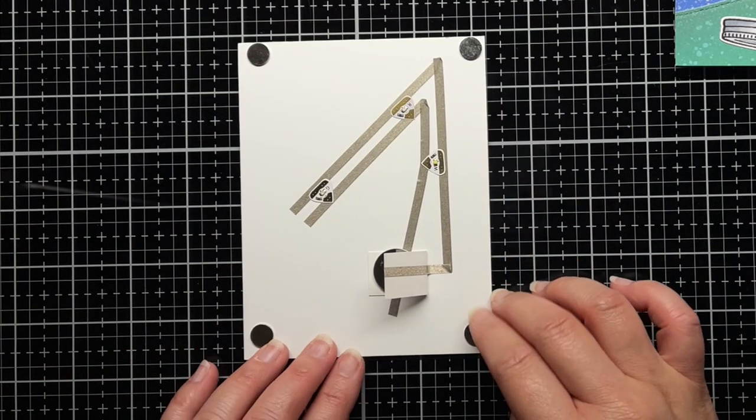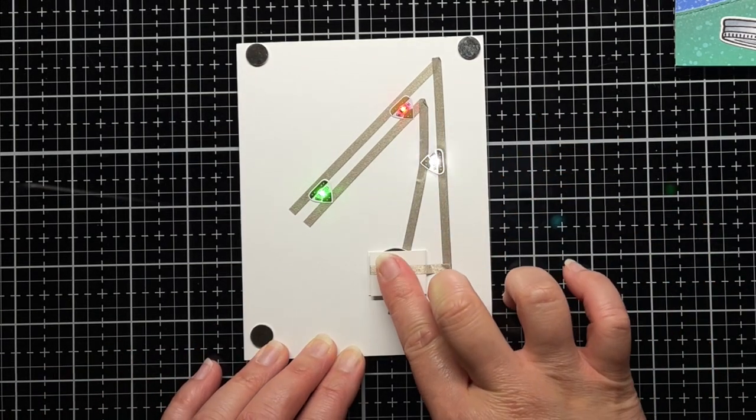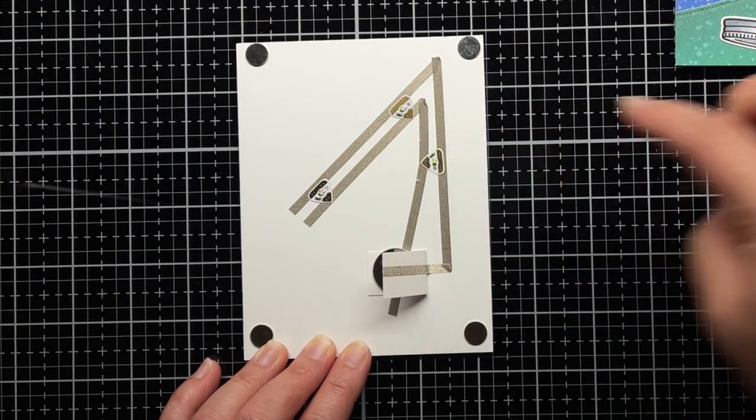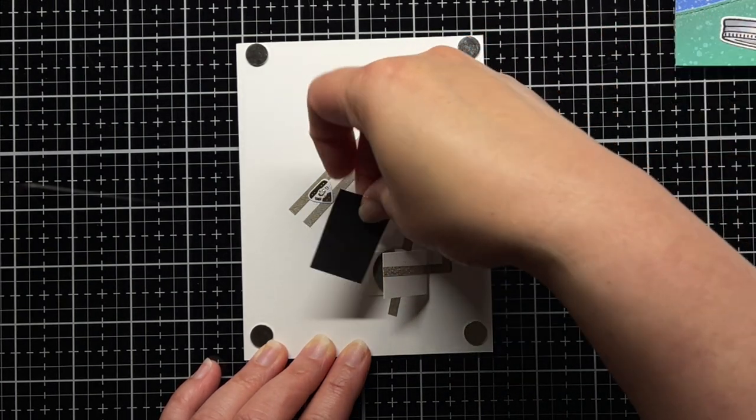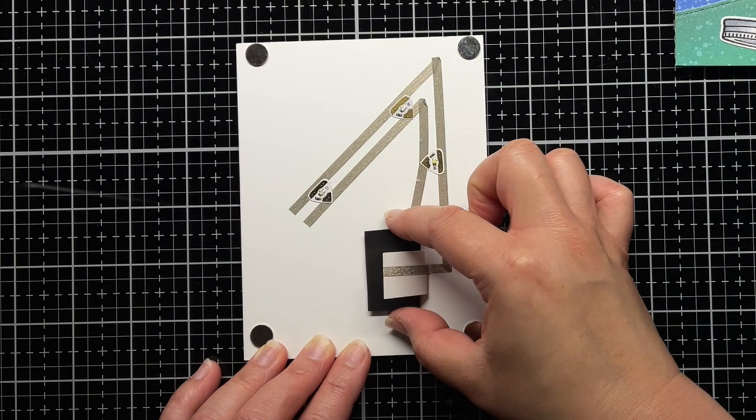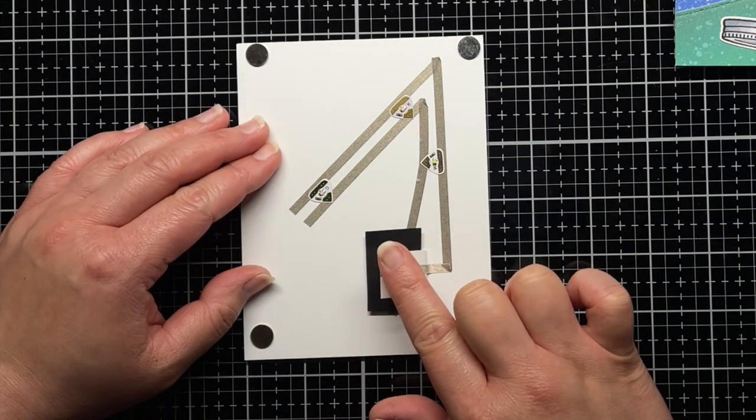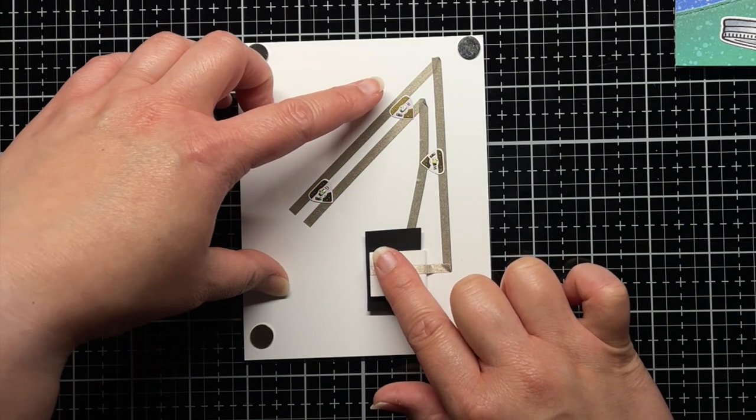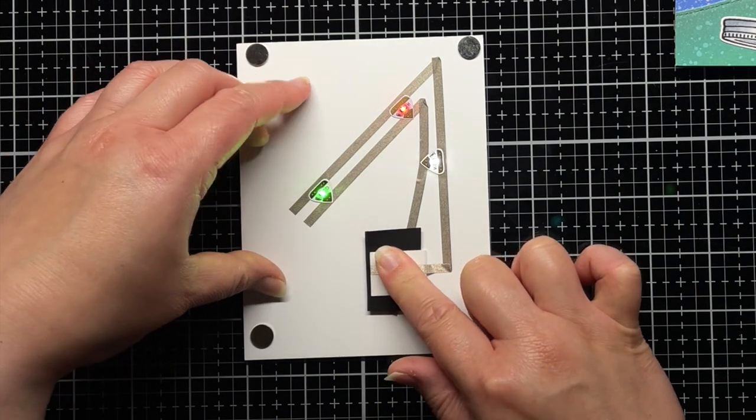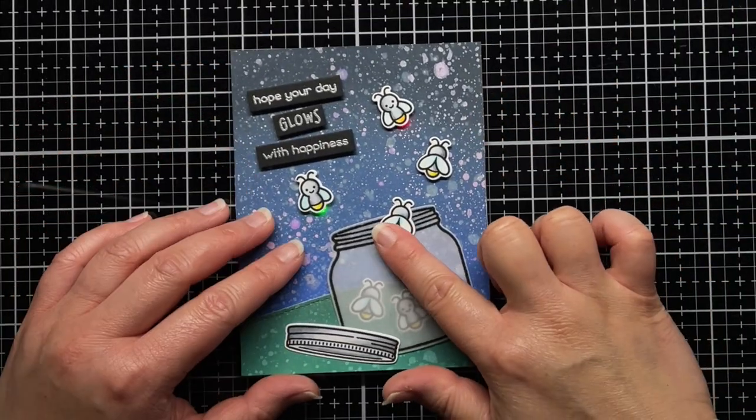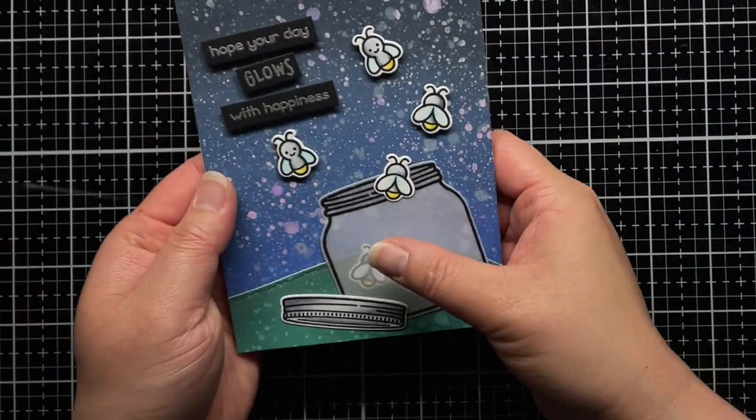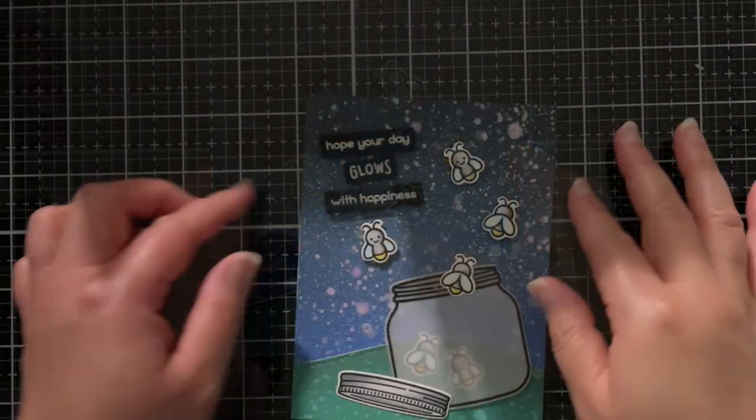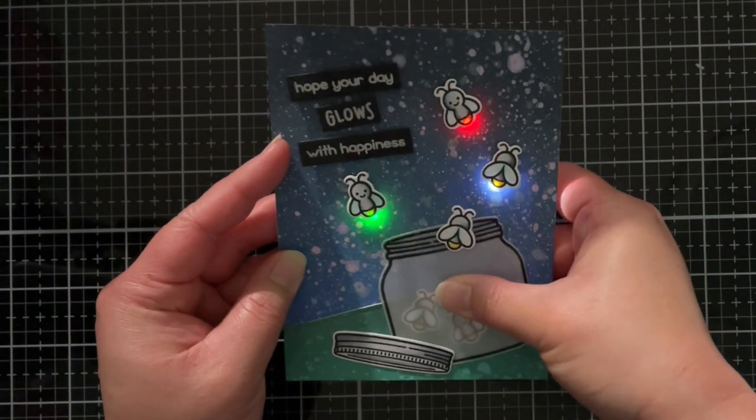I created another circuit this time using a red, green, and white LED sticker. When I add the pressure sensitive plastic, the stickers light up in the order red, green, and finally white. When I place my Firefly panel over the top with my magnets, you can see how the Fireflies appear to twinkle. Here's another look at that effect with my desk lights off.